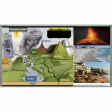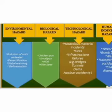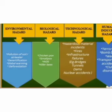Next, volcanic hazard — that is eruptions and lava flows. Environmental hazard includes pollution of soil, air, water, desertification, global warming, and deforestation. Biological hazard includes chicken pox, small pox, and killer bees. Technological hazard includes hazardous material incidents, fires, infrastructure failures with reference to bridges, tunnels, dams, and nuclear and radiological accidents. Eighth, human-induced hazard includes terrorism, bomb blasts, war, transportation accidents, and civil disorders.